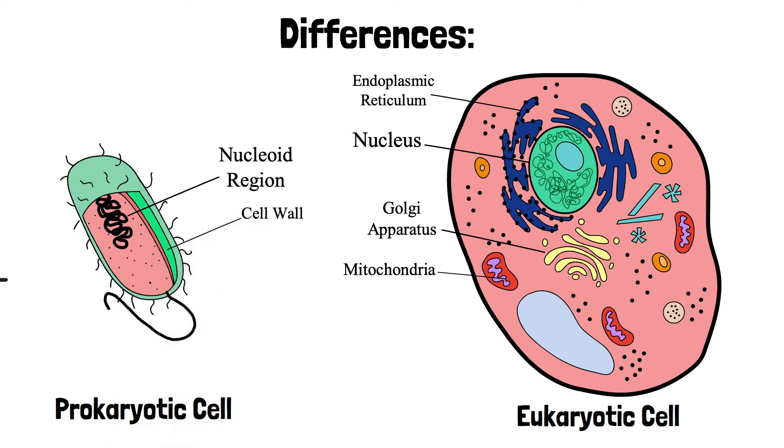Prokaryotes have an outer cell wall, while in eukaryotes, only a few of them have cell walls, like plants.